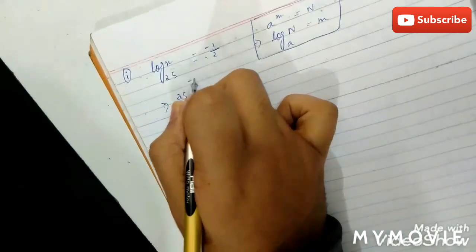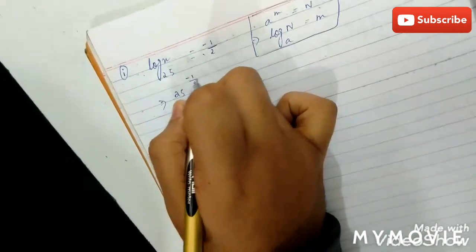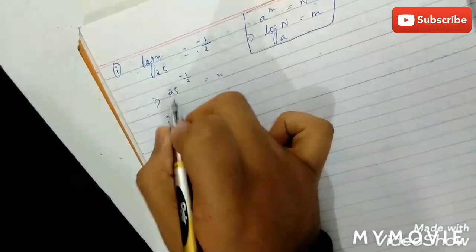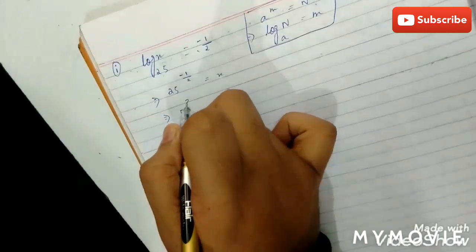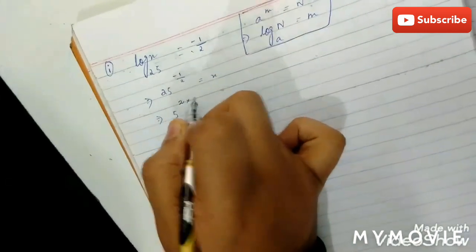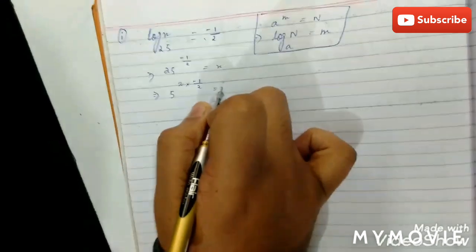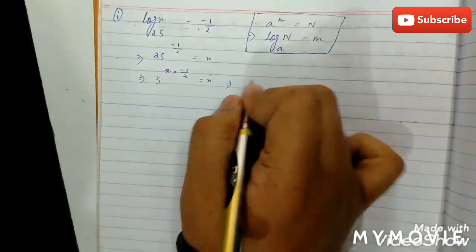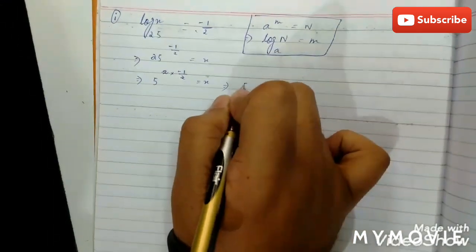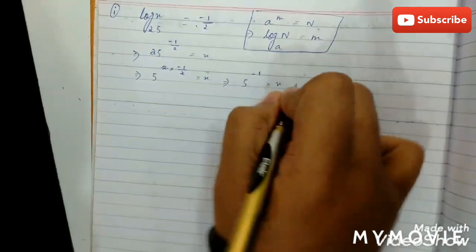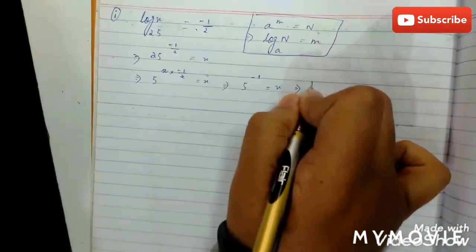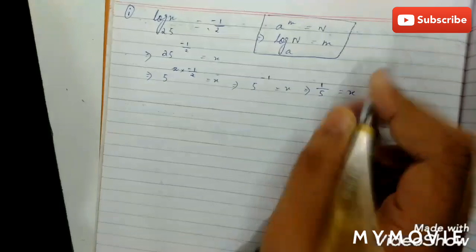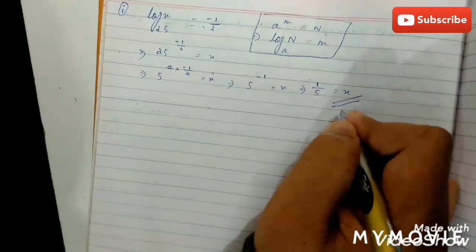So, 25 to the power minus 1 by 2 equals x. Then 25 can be written as 5 squared. 5 squared into minus 1 by 2 equals x. The 2s cancel, giving 5 to the power minus 1 equals x. And 5 to the power minus 1 can also be written as 1 by 5, which equals x. This is the value of x.